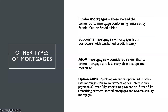The last type of mortgage we are going to discuss is the option ARMs. Option ARMs, as the name suggests, allow us to pick a payment option on the adjustable rate mortgages which we discussed in the last video. In the option ARMs, the available options include: minimum payment option, interest-only payment, 30-year fully amortizing payment, 15-year fully amortizing payment, second mortgages, or reverse annuity mortgages.